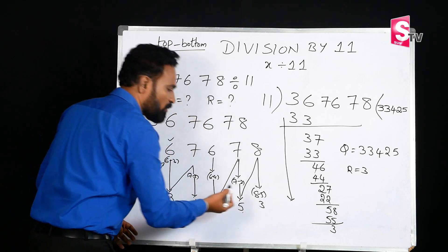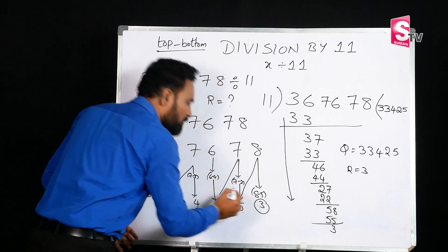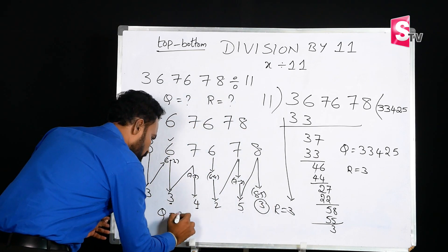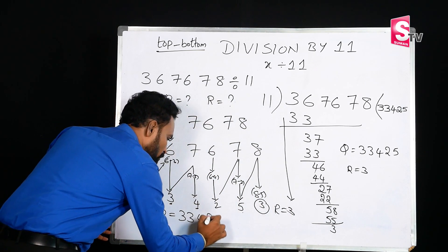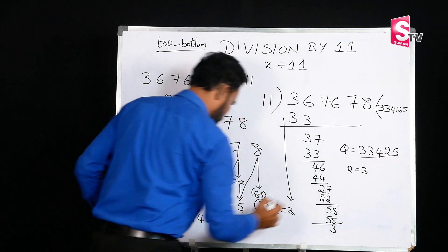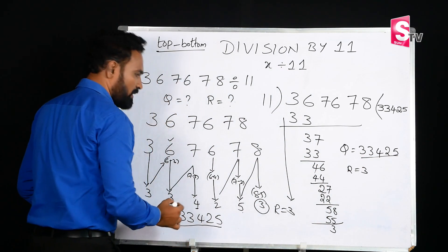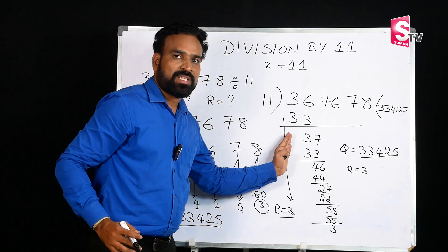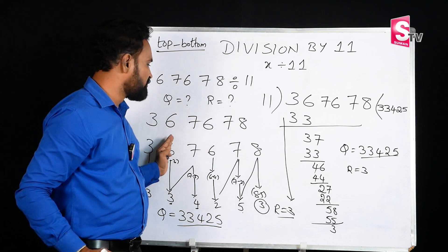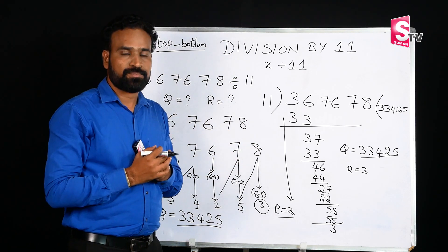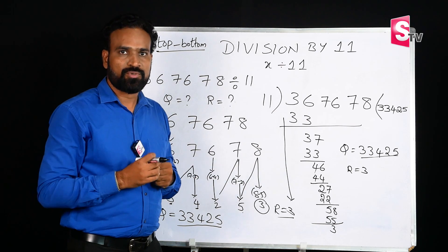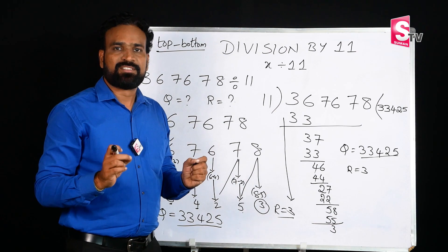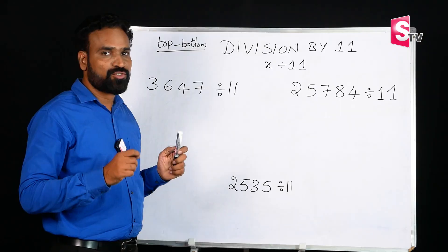The last number we have is the remainder. Remainder is 3. Quotient is 3-3-4-2-5. Check here: quotient is 33425 and remainder is 3. This is 10 to 15 times faster than the normal school method. If you want this Vedic Mathematics course, you can see the link in the description below and download the AllieMinds app. Let's do some more examples.